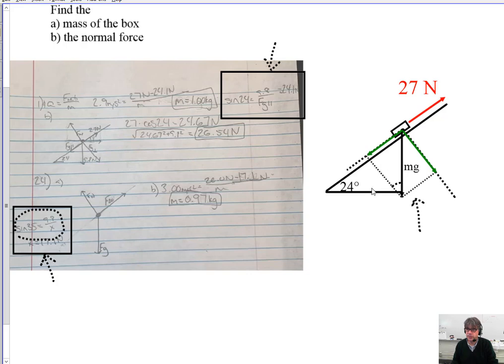So since this is theta here, when I think about like sine of 24 degrees, right? That is going to be opposite over hypotenuse. And so the parallel component is the opposite, right?